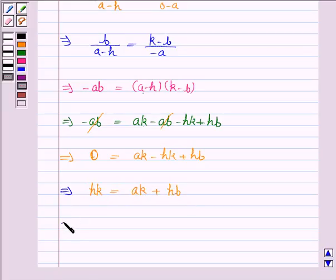Now, dividing both sides by hk, we have hk/hk equals ak/hk plus hb/hk.